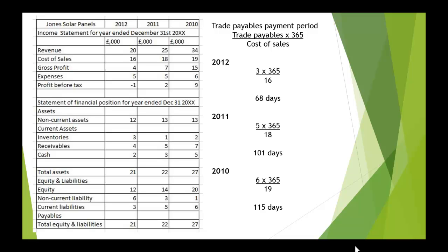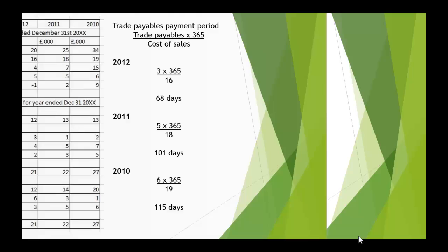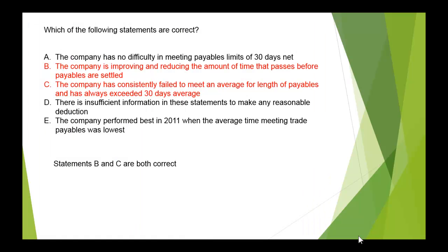We can see that it has been reducing from 115 days down to 68, and 2010 was the largest period. All of those figures are failing to meet a 30-day period, which would normally be expected. Going back to the statements, B and C are correct: the company is showing an improvement and reducing the amount of time before payables are settled, but it is also consistently failing to meet the average expected payment length, always exceeding 30 days.